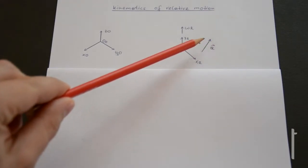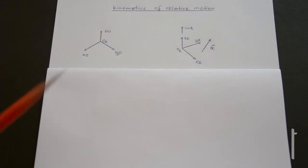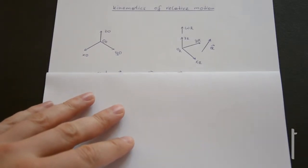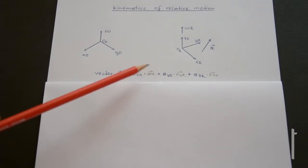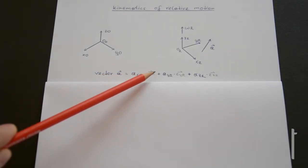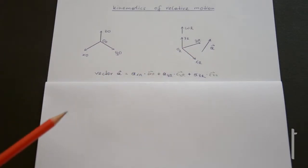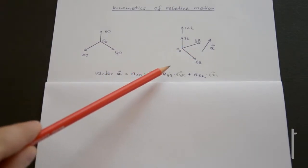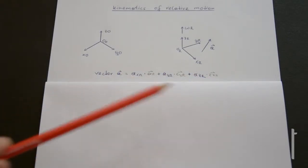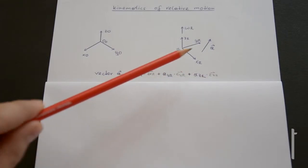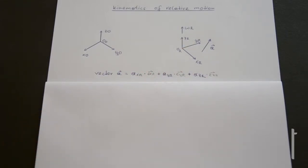Now I have a basic vector A in this rotating frame of reference. If we depict the vector in the rotating frame of reference it looks like this: some scalar quantity times e_xr (the x-direction of the rotating frame of reference) plus some scalar times e_yr, and so on for the z-direction as well. So this vector is depicted in the rotating frame of reference.